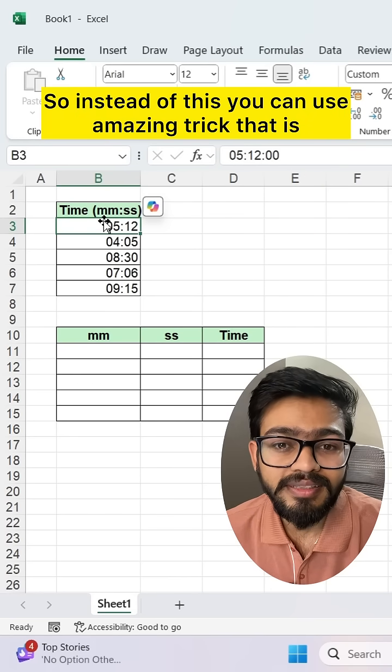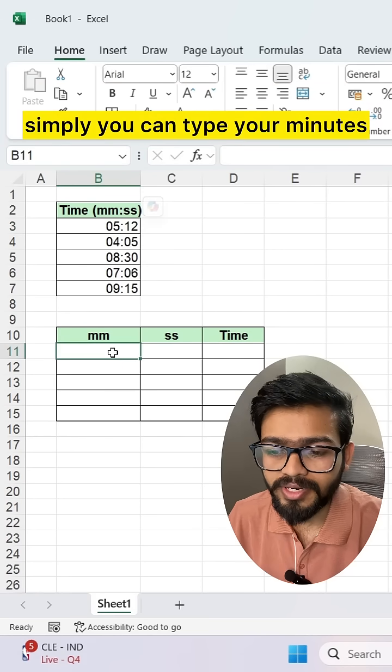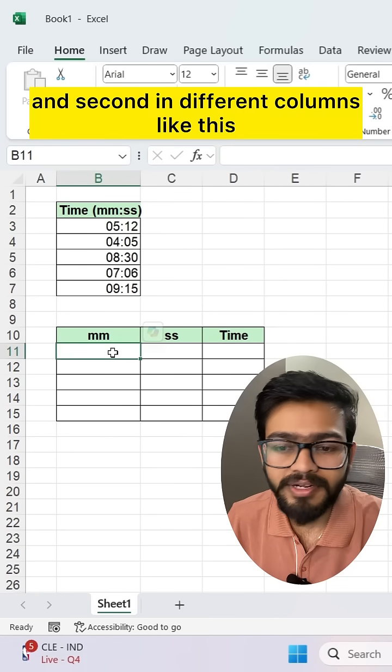So instead of this, you can use an amazing trick that is simply you can type your minutes and seconds in different columns like this.